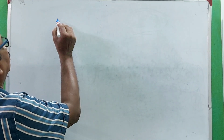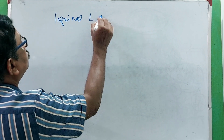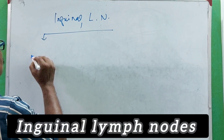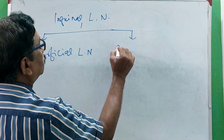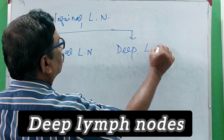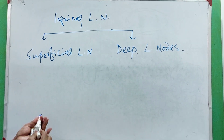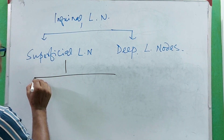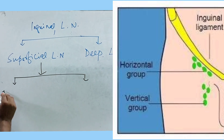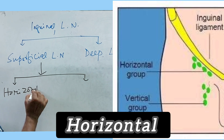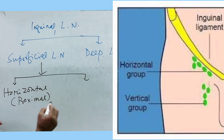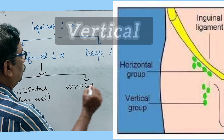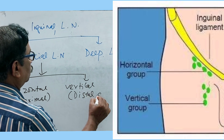If we classify the inguinal lymph nodes, you get two groups: one is the superficial group and another is the deep group of lymph nodes. The superficial lymph nodes are again divided into two groups — one is the horizontal group, also called the proximal group, and the second is the vertical group, also called the distal group of lymph nodes.